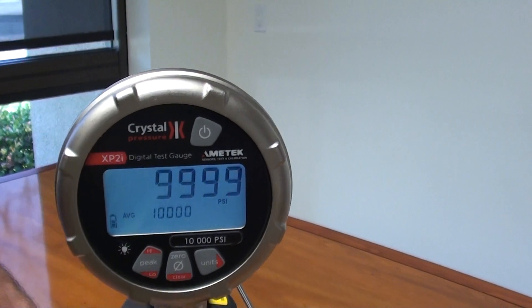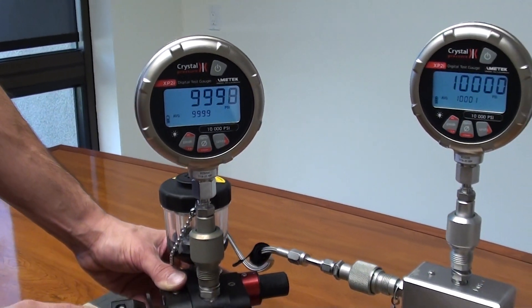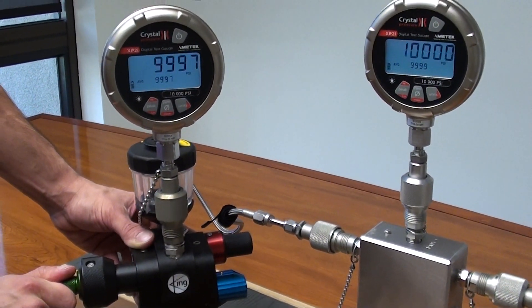And that's it. 10,000 PSI using a King Neutronics Model 3750 hand pump.